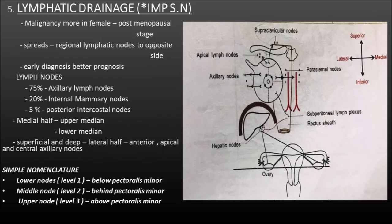Now let us move on to the most important topic which is the lymphatic drainage. It is also an important short note which is often asked. The malignancy of mammary gland is common in females particularly in the postmenopausal stage, and it almost always spreads to the regional lymph nodes. Early diagnosis has a better prognosis. The 75% of lymphatic drainage goes into axillary nodes, 20% into the internal mammary nodes and 5% into the posterior intercostal nodes.